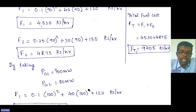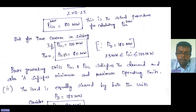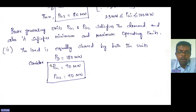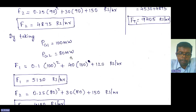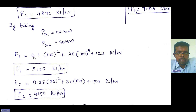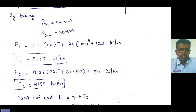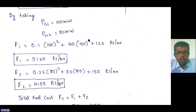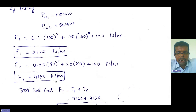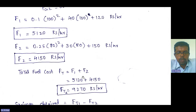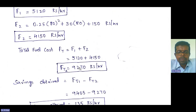Now calculate the total fuel cost using the economic load dispatch values: PG1 = 100 megawatt, PG2 = 80 megawatt. Substituting PG1 = 100 megawatt into F1 gives fuel cost F1 = 5120 rupees per hour. Substituting PG2 = 80 megawatt into F2 gives fuel cost F2 = 4150 rupees per hour. Total fuel cost from economic load dispatch = 5120 + 4150 = 9270 rupees per hour.